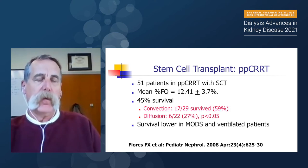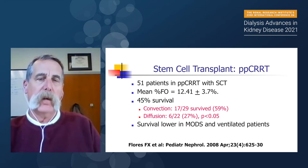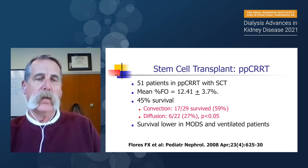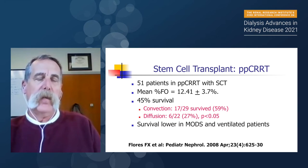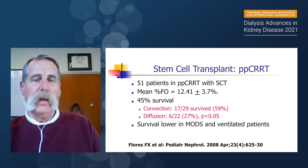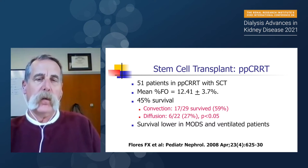Looking at Francisco Flores's data — a study of 51 patients with stem cell transplant who all required dialysis for kidney failure — there was a 45% survival rate with a mean fluid overload of 12.5%. Interestingly, looking at CVVH (convection), there is almost a 60% survival rate, while CVVHD (diffusion) showed only 27%. This may be a small-sample error, but it does raise the question: is convection better than diffusion on CRT?